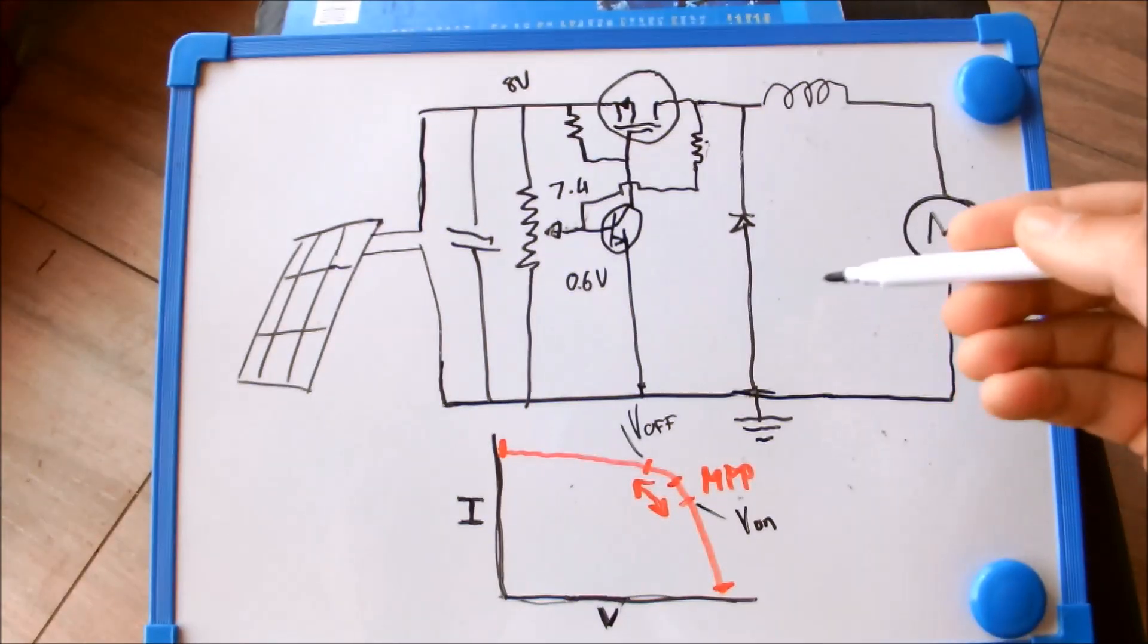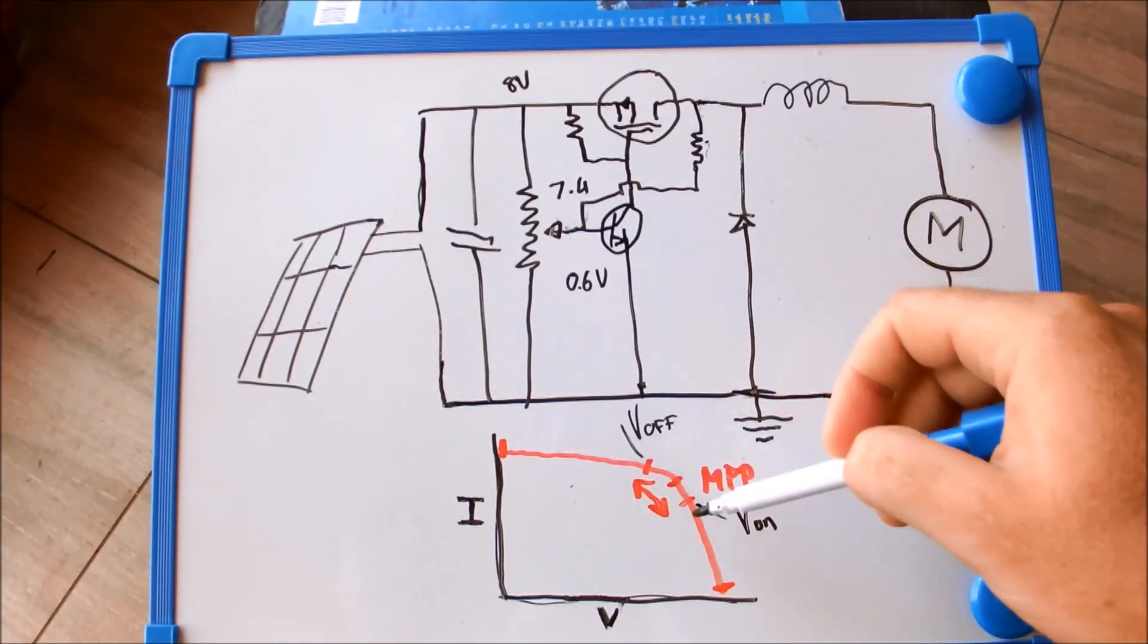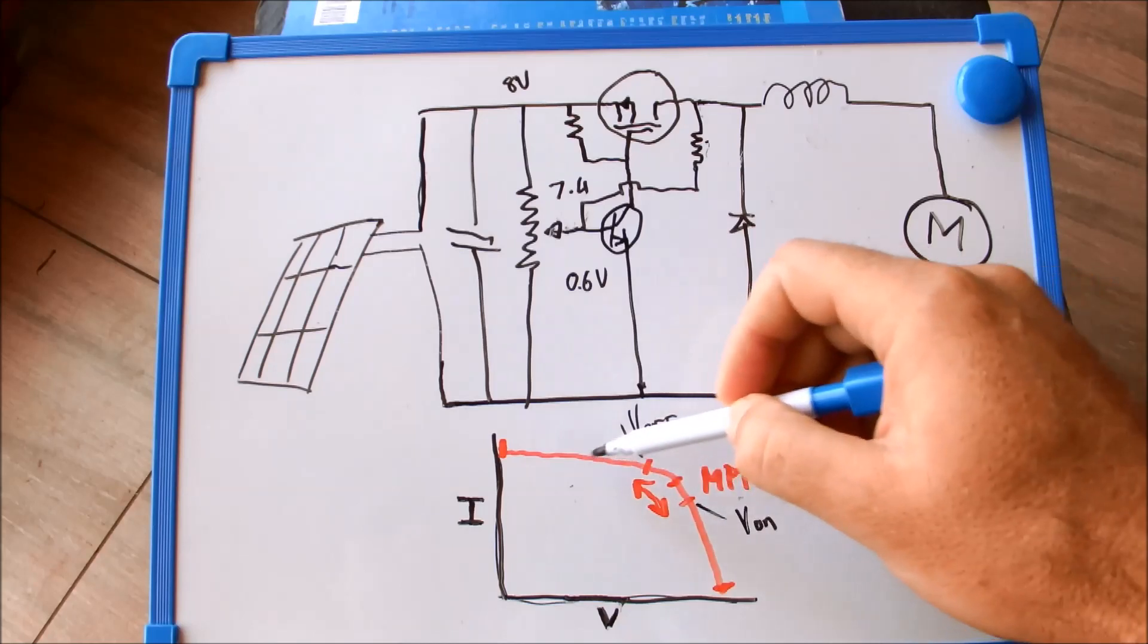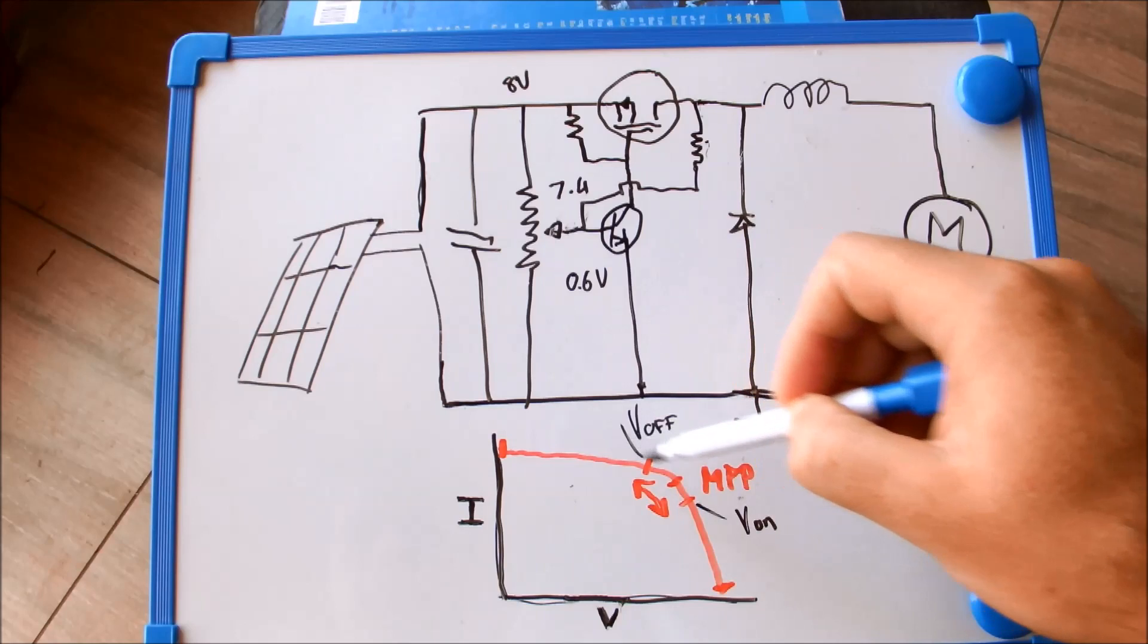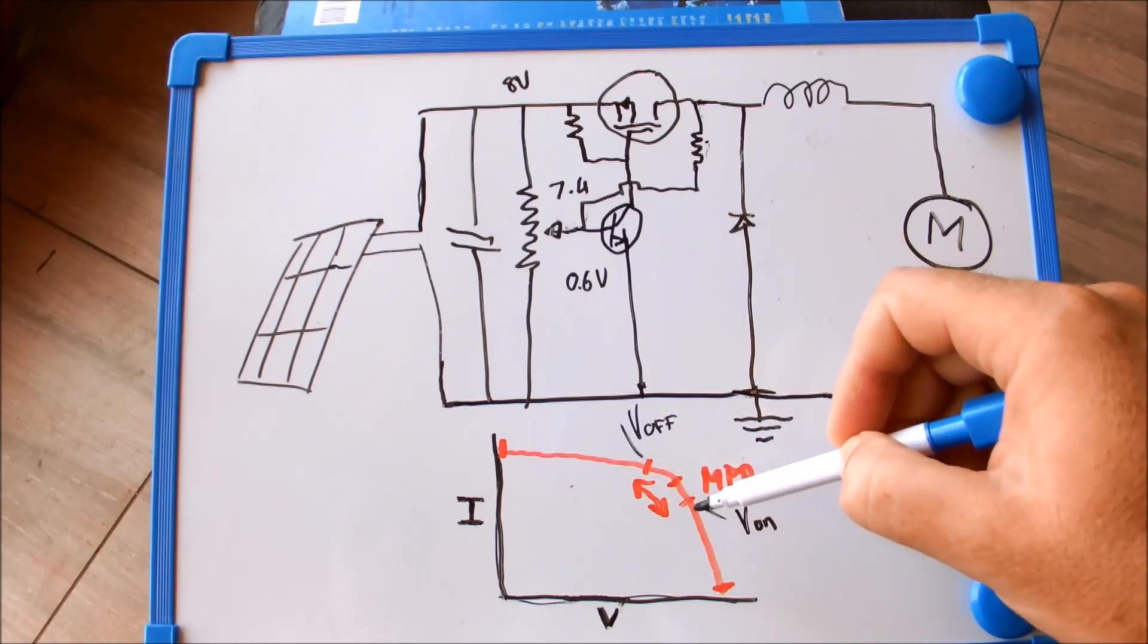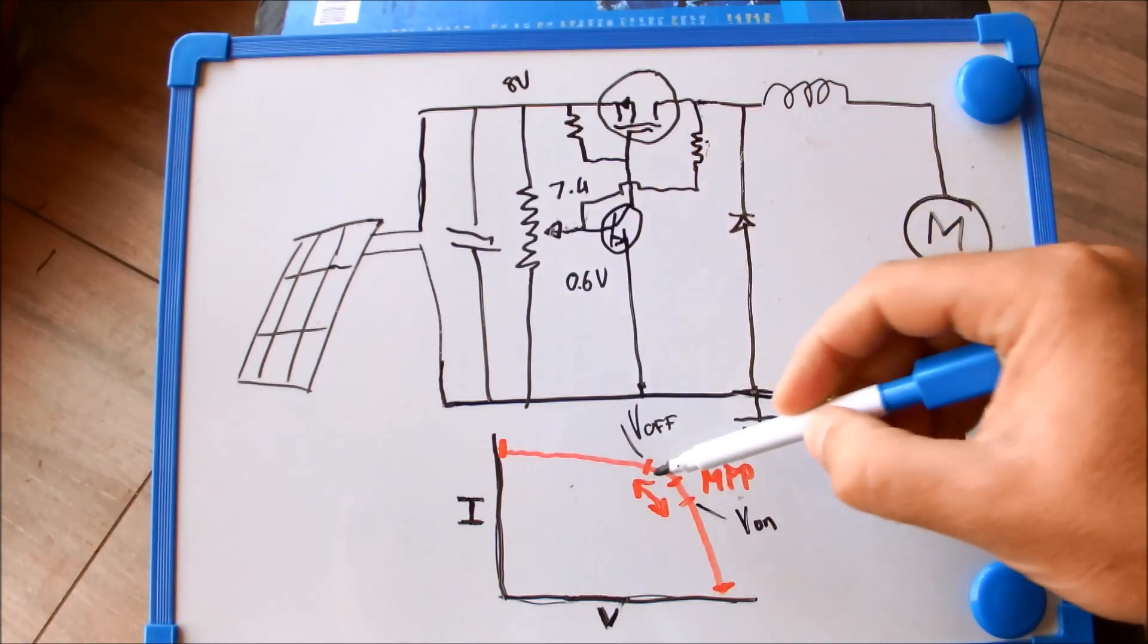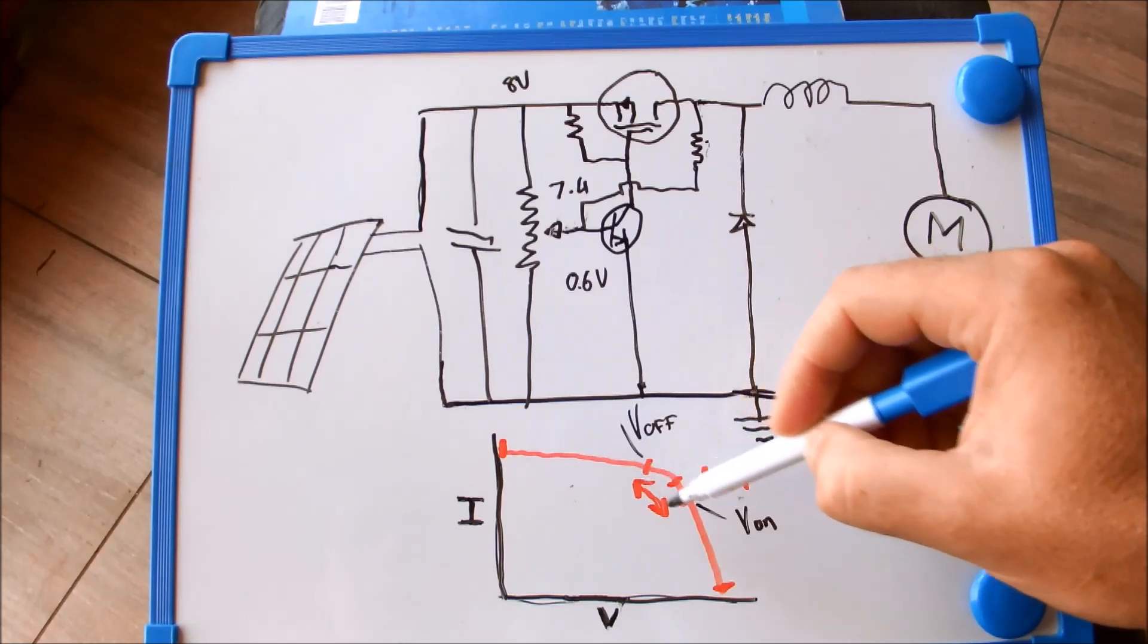The frequency at which this switch will switch on and off and at which the panel will oscillate depends on the difference between these two voltage points. The further they are apart, the longer it will take before the circuit reaches either point of switching on or switching off. The other thing that would reduce the frequency is the size of the capacitor. The larger the capacitor, the longer it will take to discharge and recharge between each switching operation.